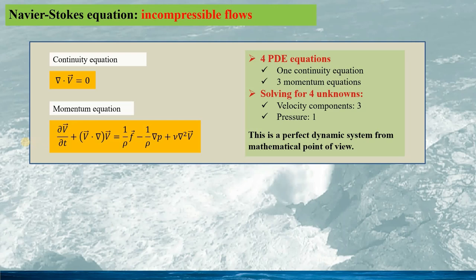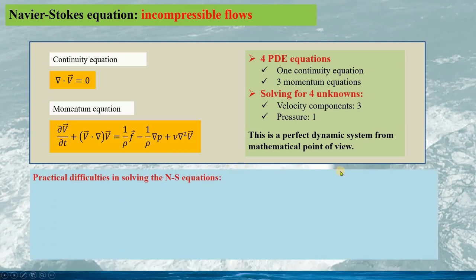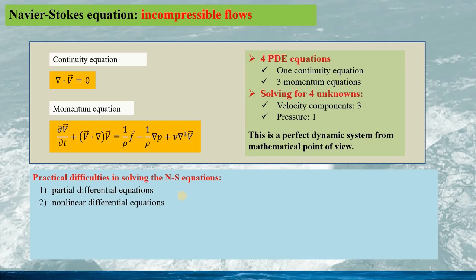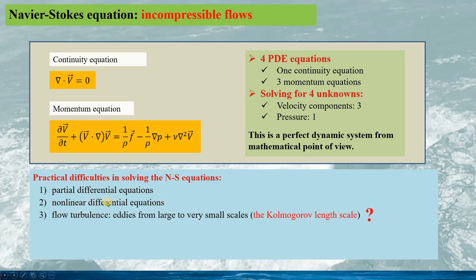However, the question is how we can solve the Navier-Stokes equation, especially for practical applications, which are very complicated and difficult, since the Navier-Stokes equations are nonlinear partial differential equations. The practical flows involve turbulence with eddies from large to very small scale — the Kolmogorov length scale. Therefore, currently we have a real challenge in turbulence modeling in CFD, although there are some successes in relatively simple flows.